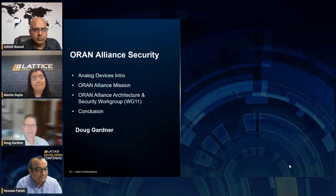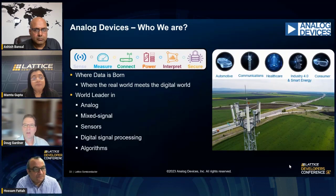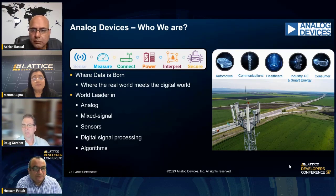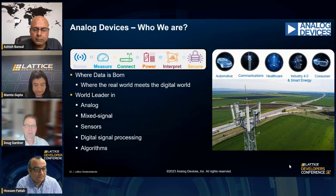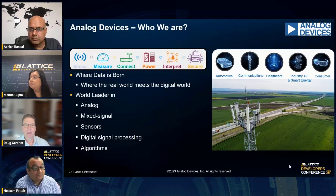I'm Doug Gardner from Analog Devices. Analog Devices senses, measures, connects, powers, interprets, and secures. We have five major business unit areas: automotive, communications, healthcare, industrial control systems, energy, and consumer. We are where data is born — where the real world meets the digital world. Sensors turn into digits that become the rest of the system. We make analog mixed signal sensors and processing algorithms. Let's talk about the ORAN Alliance — I am on Working Group 11 of the ORAN Alliance, and I'll give a spotlight on the security aspect.